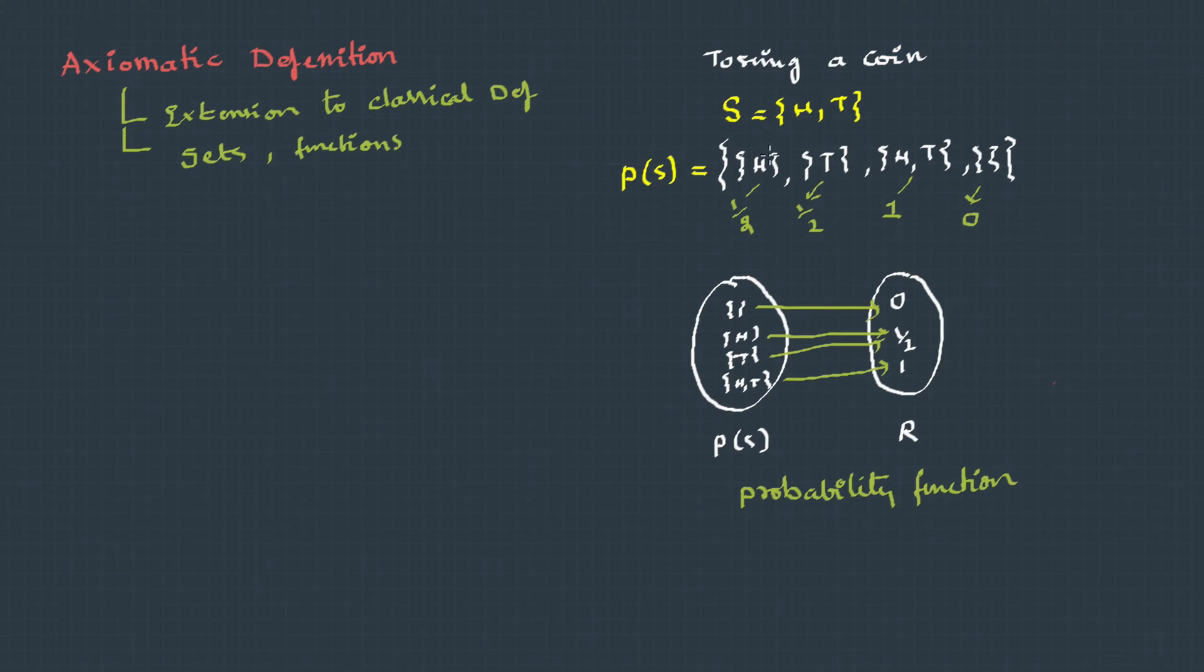If you carefully observe, none of the probabilities are negative. This becomes the first axiom. The first is the axiom of positivity, which says that every elementary event has a probability greater than or equal to zero.